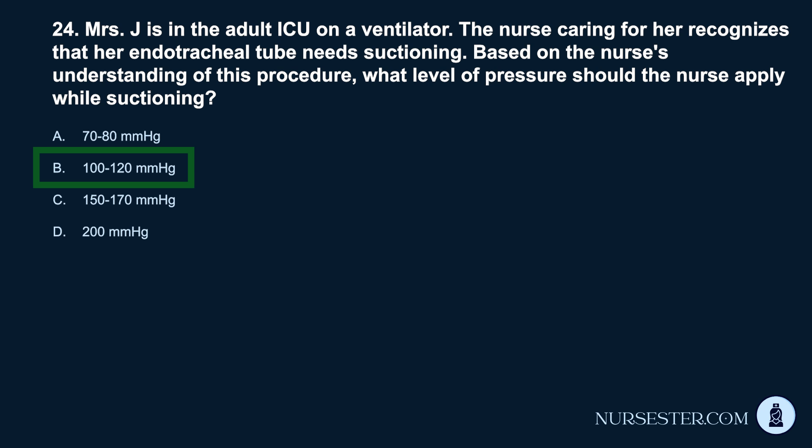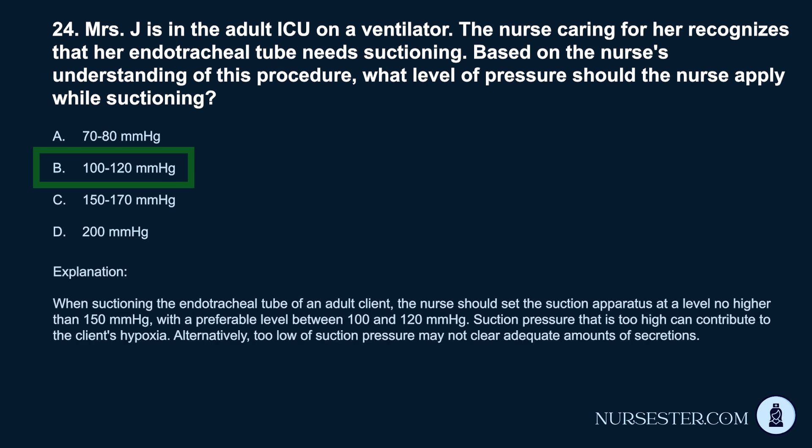Correct answer: B. 100–120 mmHg. When suctioning the endotracheal tube of an adult client, the nurse should set the suction apparatus at a level no higher than 150 mmHg, with a preferable level between 100 and 120 mmHg. Suction pressure that is too high can contribute to the client's hypoxia. Alternatively, too low of suction pressure may not clear adequate amounts of secretions.